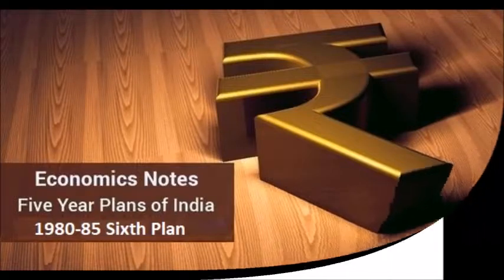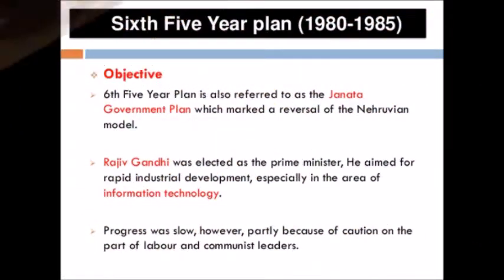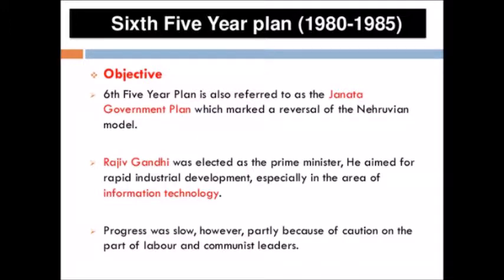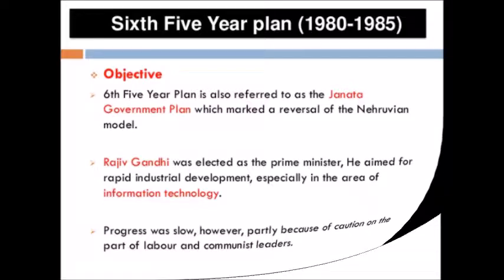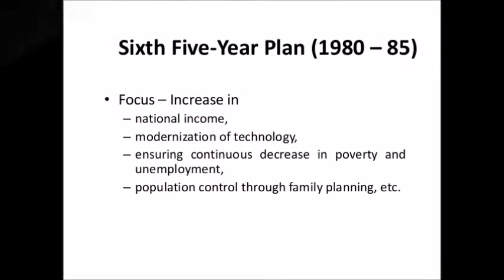The 6th Five-Year Plan is from 1980 to 1985. The Janata government had adopted a 6th plan, which was conceived as a rolling plan. Indira Gandhi's government in 1980 abandoned this, and a new 6th plan was drafted.